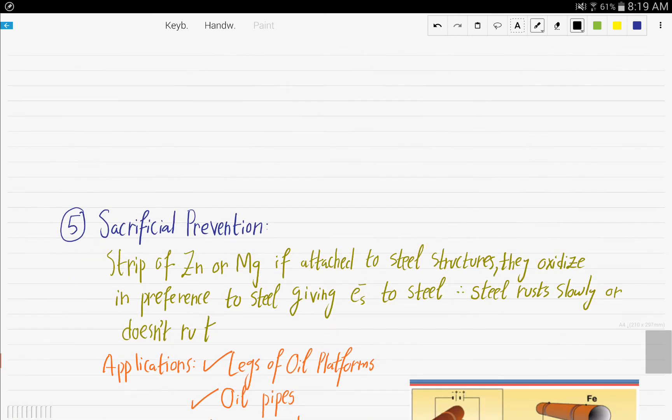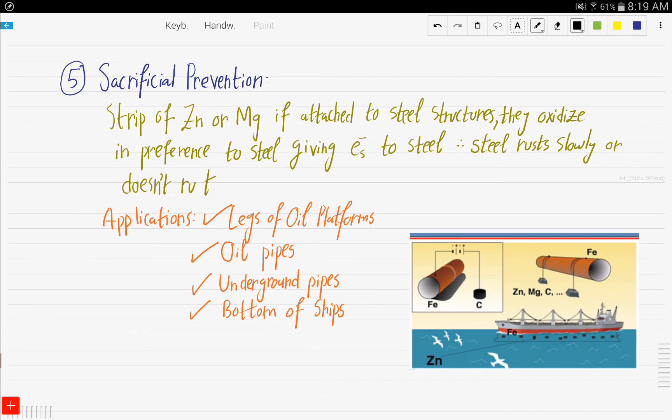The final rust prevention technique is sacrificial protection. It is similar to the idea of plating in that it depends on the reactivity of metals. Strips of zinc or magnesium, if attached to steel structures, will oxidize in preference to steel because they're more reactive, giving electrons to steel. Therefore, the steel or iron will rust slowly or won't rust at all. Some applications of sacrificial protection are legs of oil platforms, oil pipes, underground pipes, and bottoms of ships.